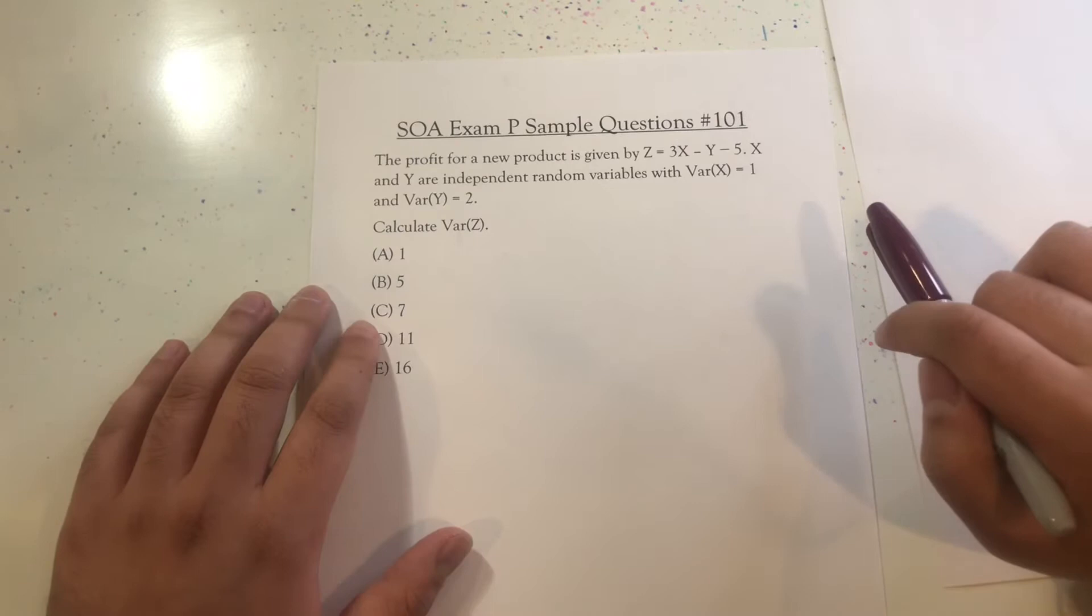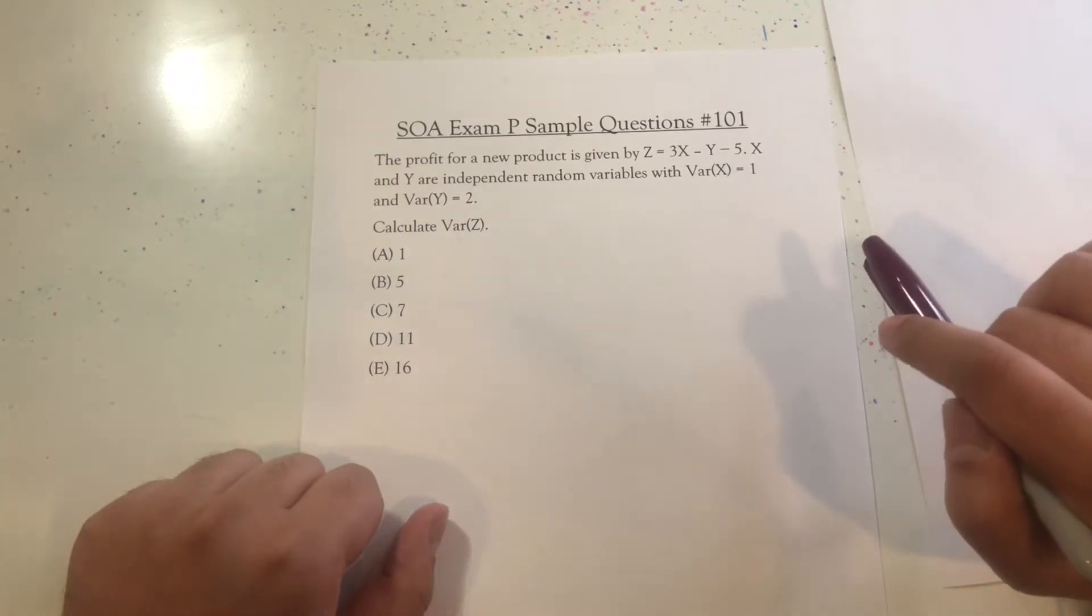profit for a new product is given by Z equals 3X minus Y minus 5. X and Y are independent random variables. Variance of X equals 1. Variance of Y equals 2. Calculate the variance of Z.